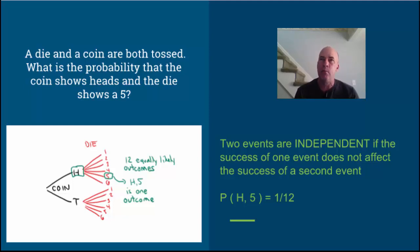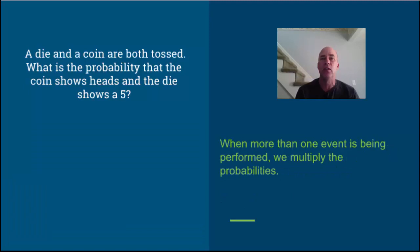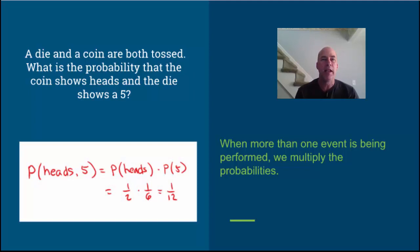But that leads us to our important rule here for multi-stage events. When more than one event is being performed, we multiply the probabilities. Think back to that tree diagram as a reason why. If we use that formula with our coin and die example, the probability of getting both heads and a 5 at the same time is the probability of heads, which is 1/2, times the probability of getting a 5 on the die, which is 1/6. We multiply those and get 1/12. Those are independent events.